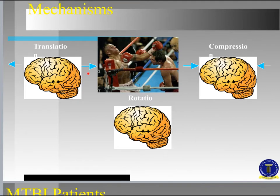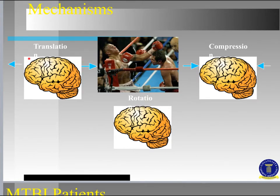The first mechanism of injury is translation, which means the brain slides backwards and then forward, repeatedly. There's movement occurring with the brain inside the cranium, and we can imagine that when it translates backward or forward within the skull, an injury will occur. That's one type of mechanism of injury.